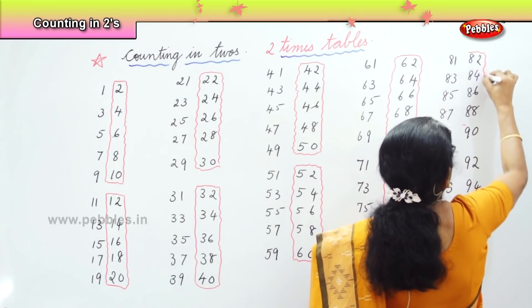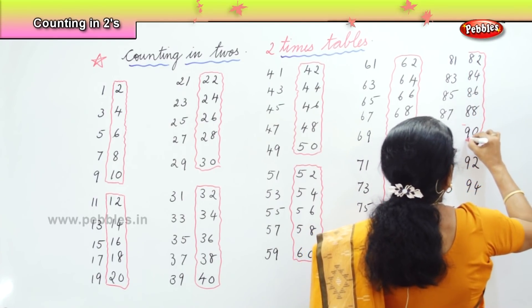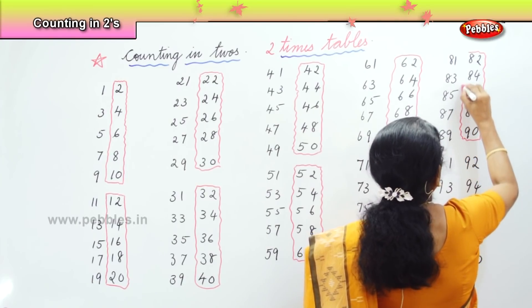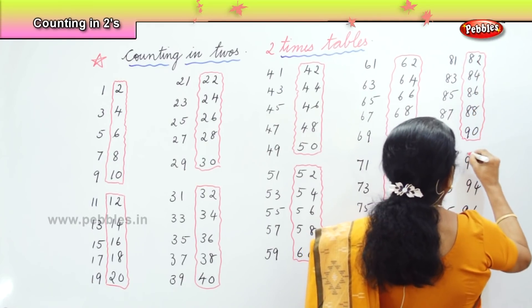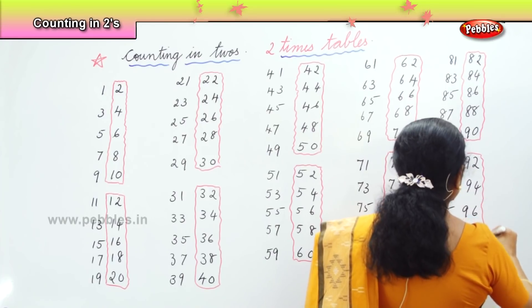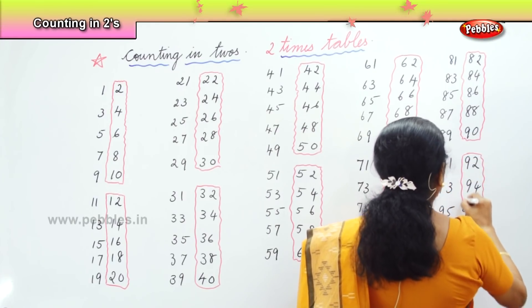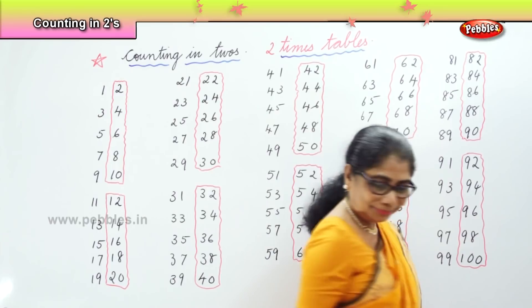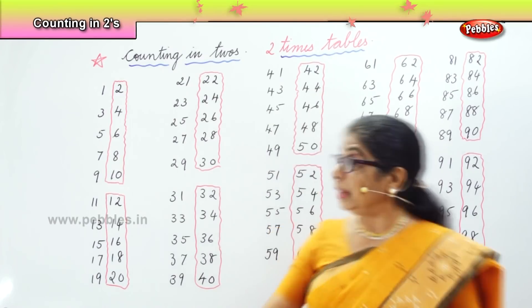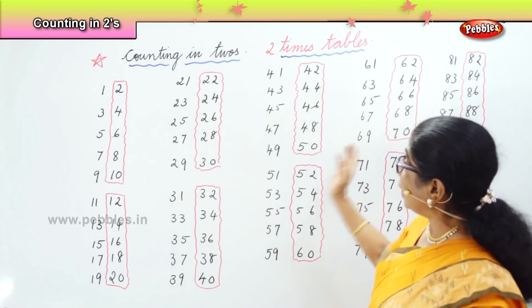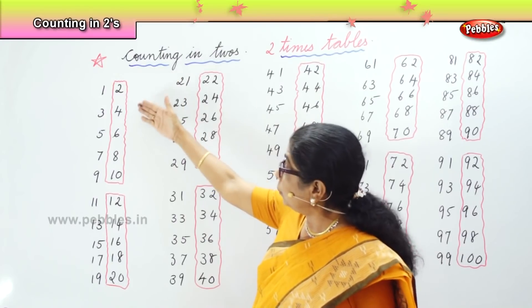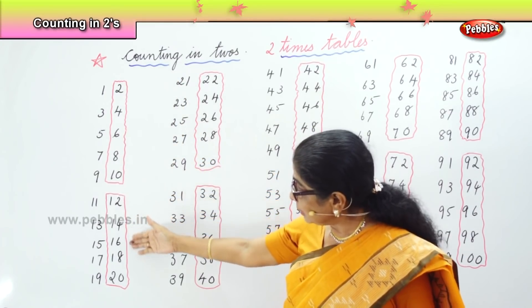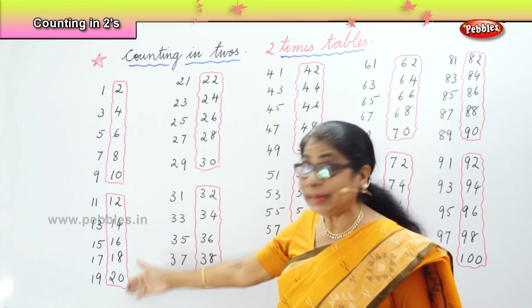Now we will touch every number and say: two, four, six, eight, ten, twelve, fourteen, sixteen, eighteen, twenty. Here we have the magic two times table building up to one hundred. Look — forget the ones we did not box, but look at only what is inside. We have built our two times table.